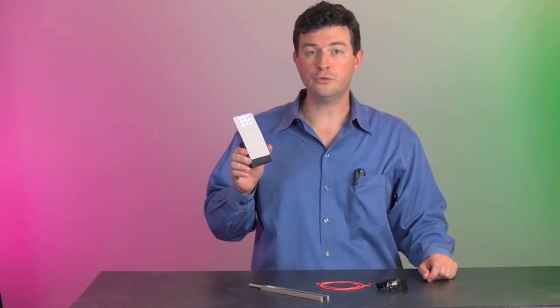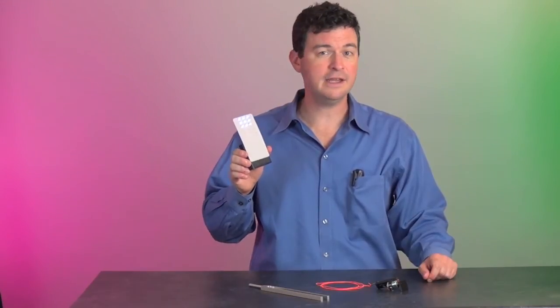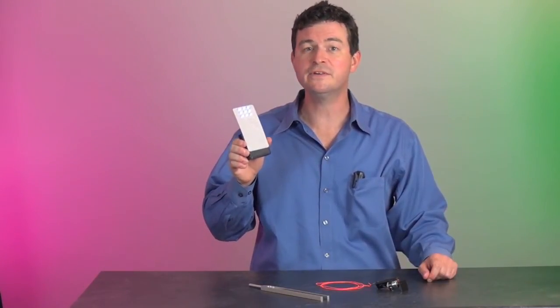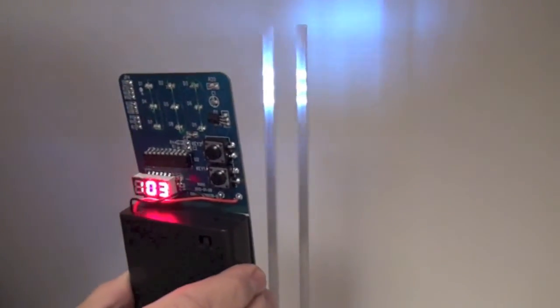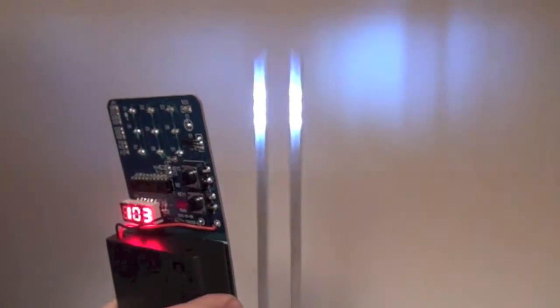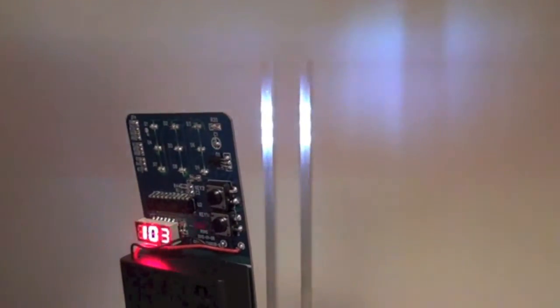The LED strobe light can be used to enhance and clarify many concepts in the physical science classroom. Simply strike a tuning fork and adjust the LED strobe light to stop or slow the motion of the vibrating tines. Students will observe how a tuning fork produces compression waves to create sound.